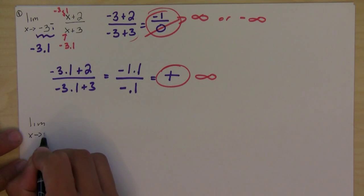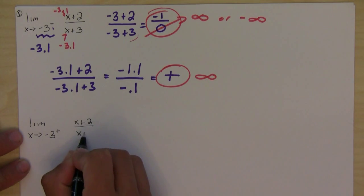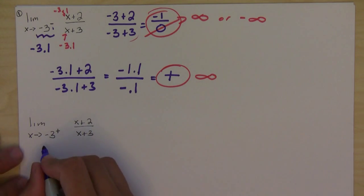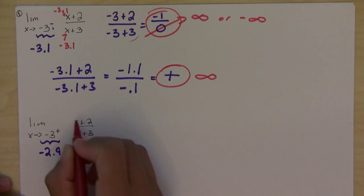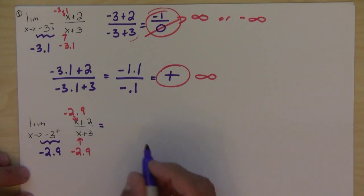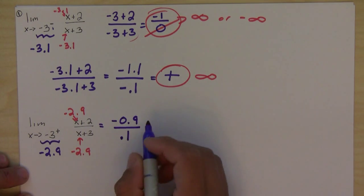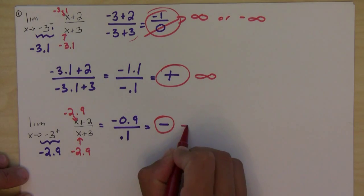Now let's look at the limit as x approaches negative 3 from the positive direction, or the right side. I'm going to pick a number close to negative 3 from the right, so let's pick negative 2.9. If I plug in negative 2.9, I would get negative 0.9 on top and positive 0.1 on the bottom, and this is a negative. So that means this is going to negative infinity.